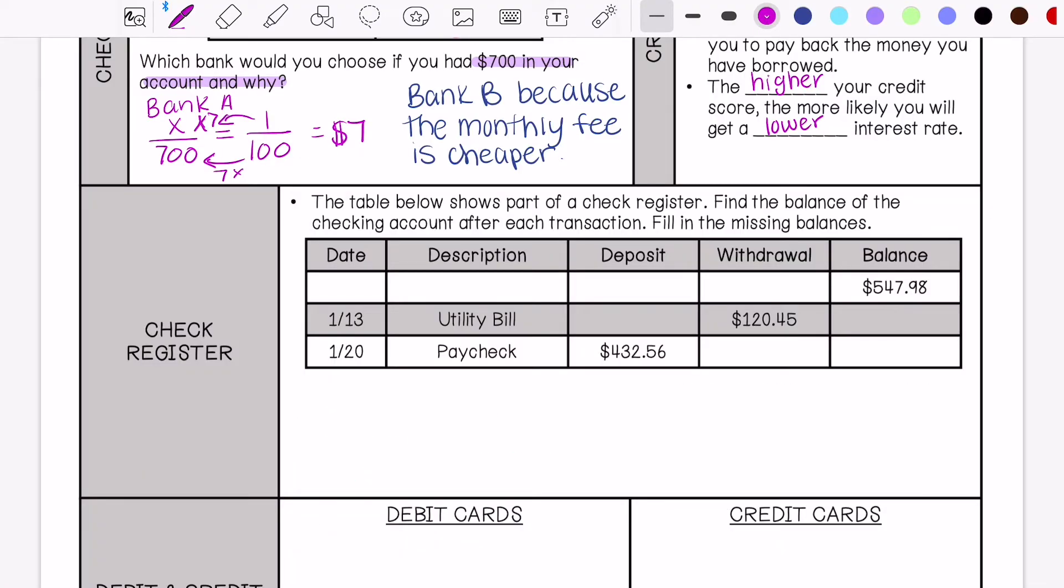The table below shows part of a check register. Find the balance of the checking account after each transaction. Fill in the missing balances. So deposit means you're putting money into your account, withdraw means you're taking money out.